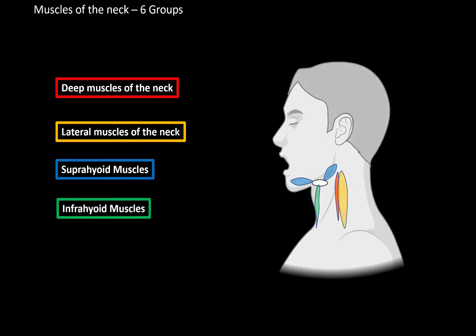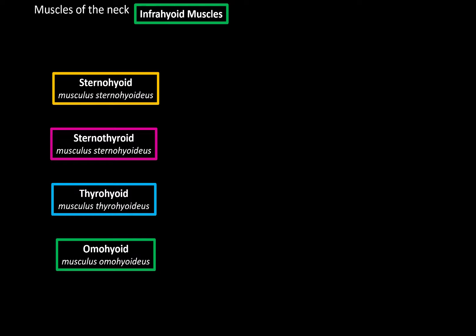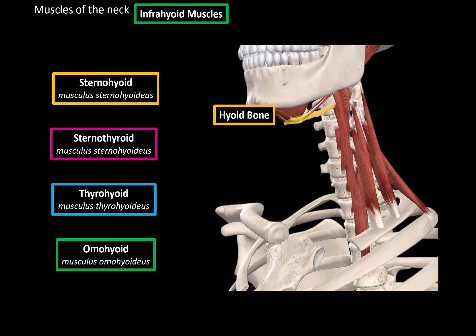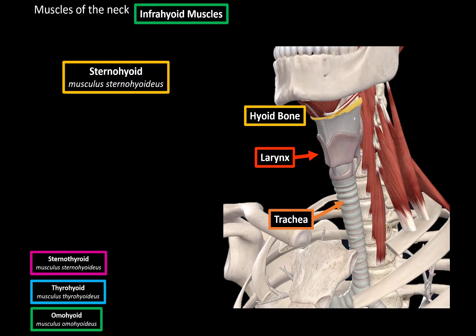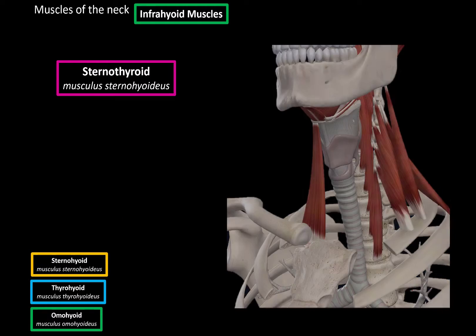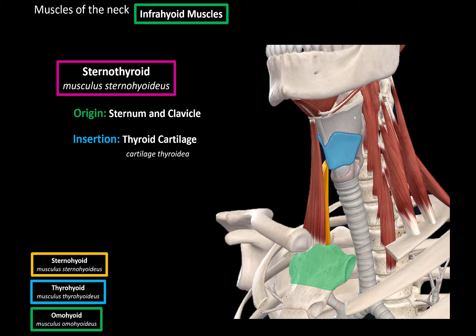Next let's cover the infrahyoid muscles, which include the sternohyoid, sternothyroid, thyrohyoid, and omohyoid muscles — all located underneath the hyoid bone. Some of these have the word 'thyro' in their name, meaning they also attach to the thyroid cartilage. Let's add the larynx and the trachea. The sternohyoid muscle originates from the sternum and the clavicle and inserts at the hyoid bone, pulling on it to fixate it. The sternothyroid muscle is located just behind the sternohyoid, also originating from the sternum and clavicle, but inserting at the thyroid cartilage and pulling it downwards.